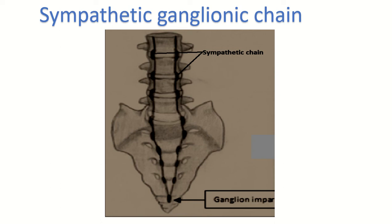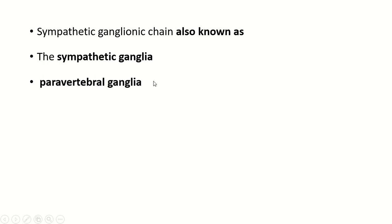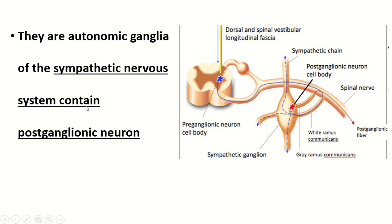Assalamualaikum, welcome to the human anatomy channel. In this video I discuss the sympathetic ganglionic chain. There are two chains, and in the lower end they unite and form the ganglion impar. The sympathetic ganglionic chain is also known as the sympathetic ganglia or paravertebral ganglia — they are autonomic ganglia of the sympathetic nervous system containing postganglionic neurons.